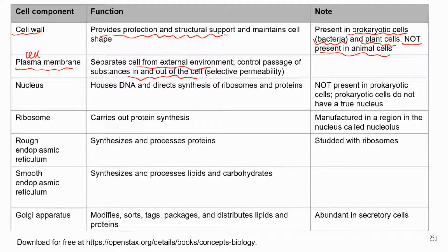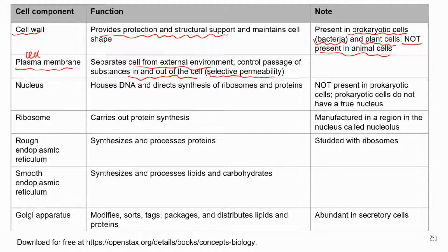Because of this regulation of the passage of substances, the cell membrane is known to have selective permeability — it's only permeable to certain substances. That's what selective permeability means.